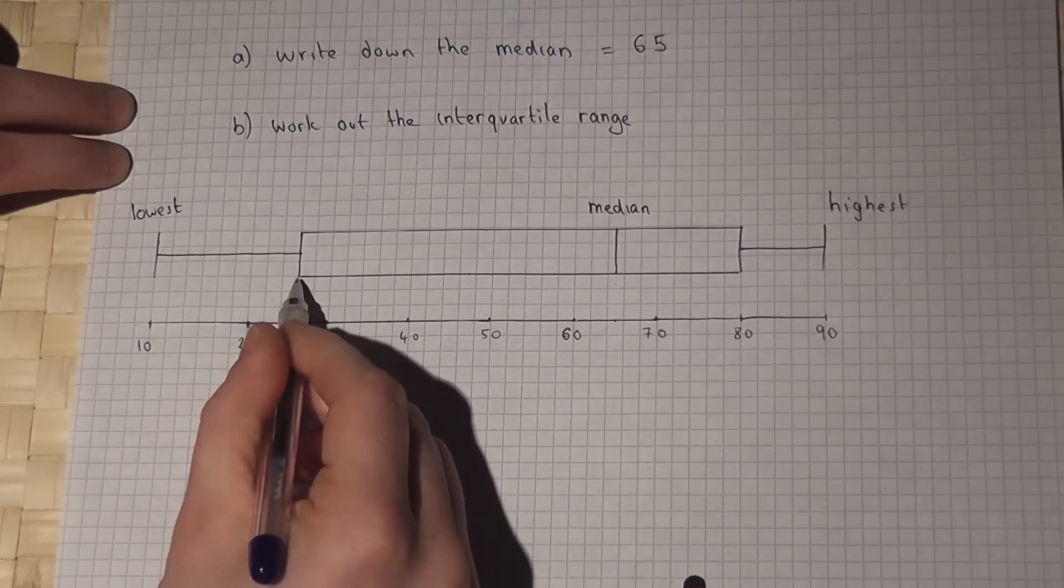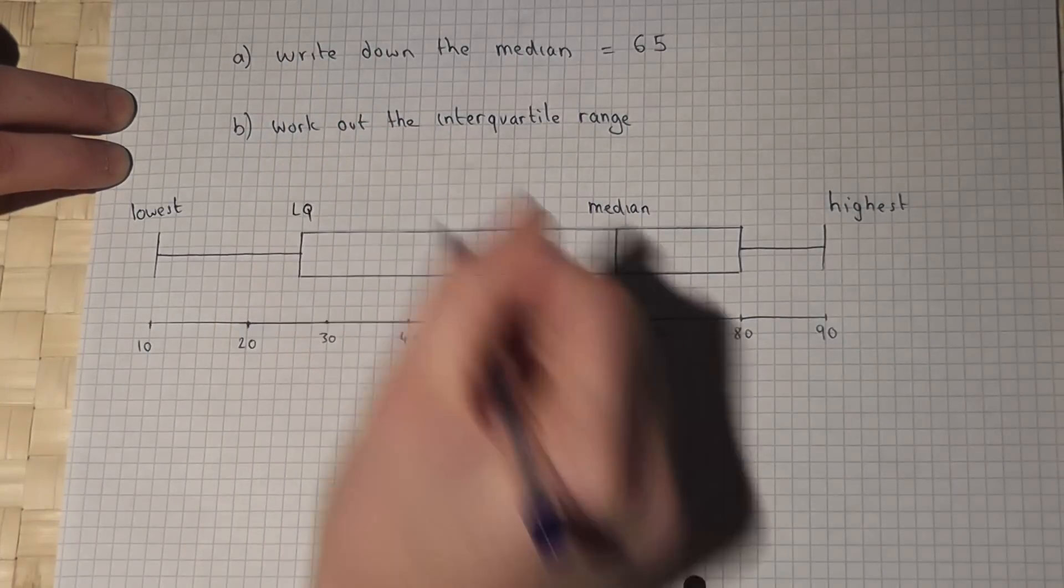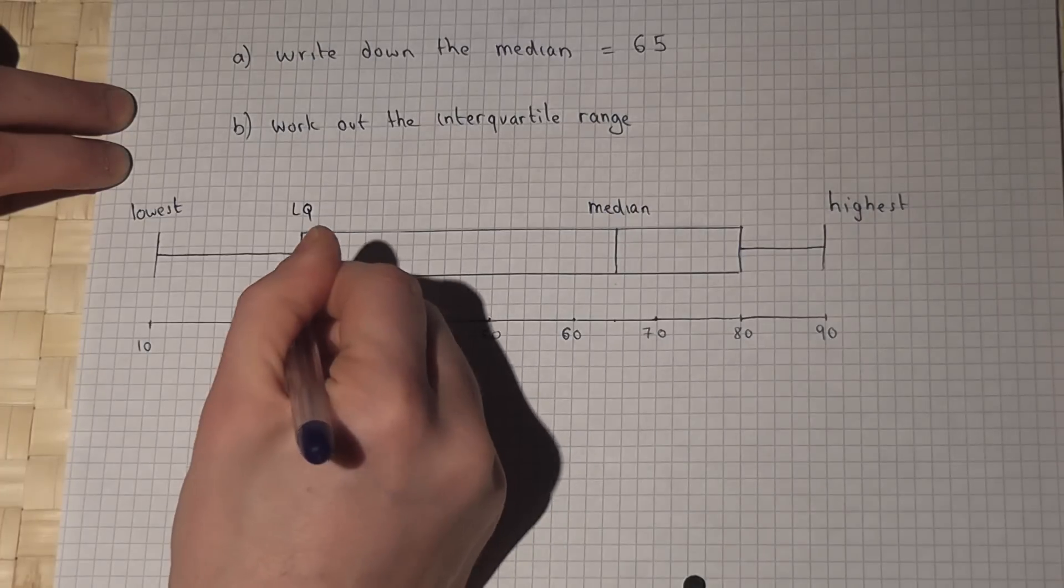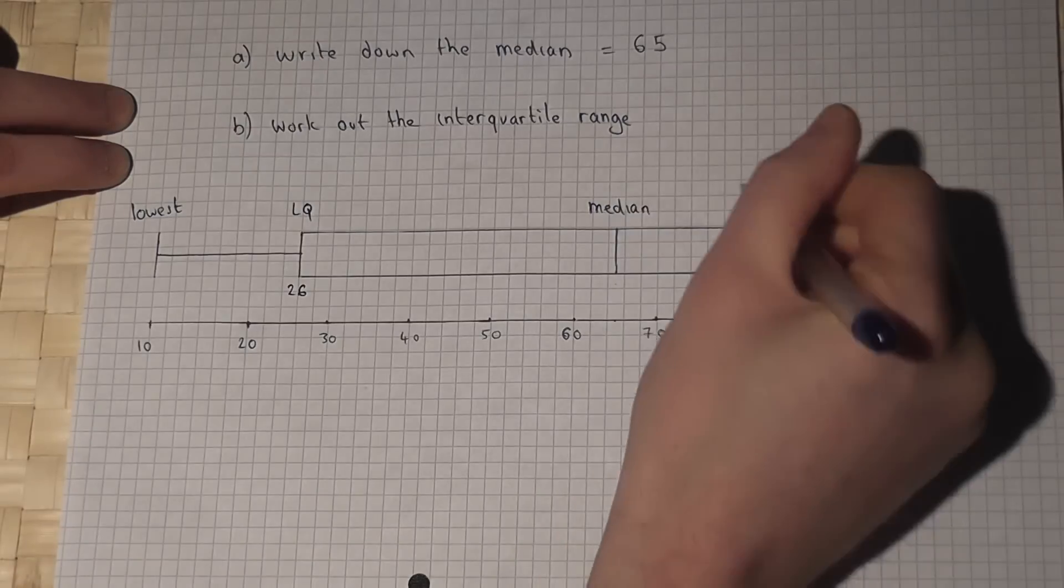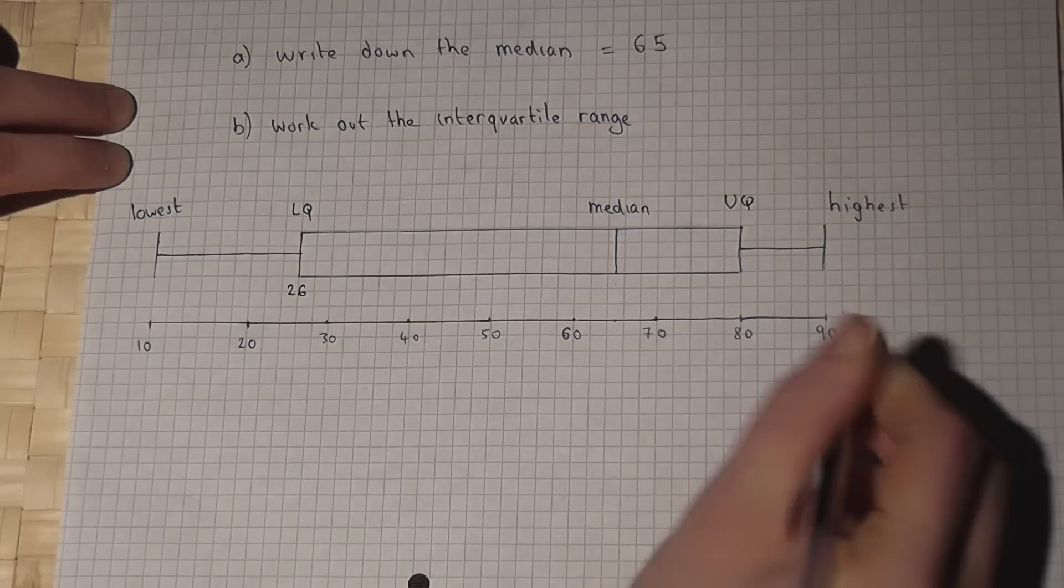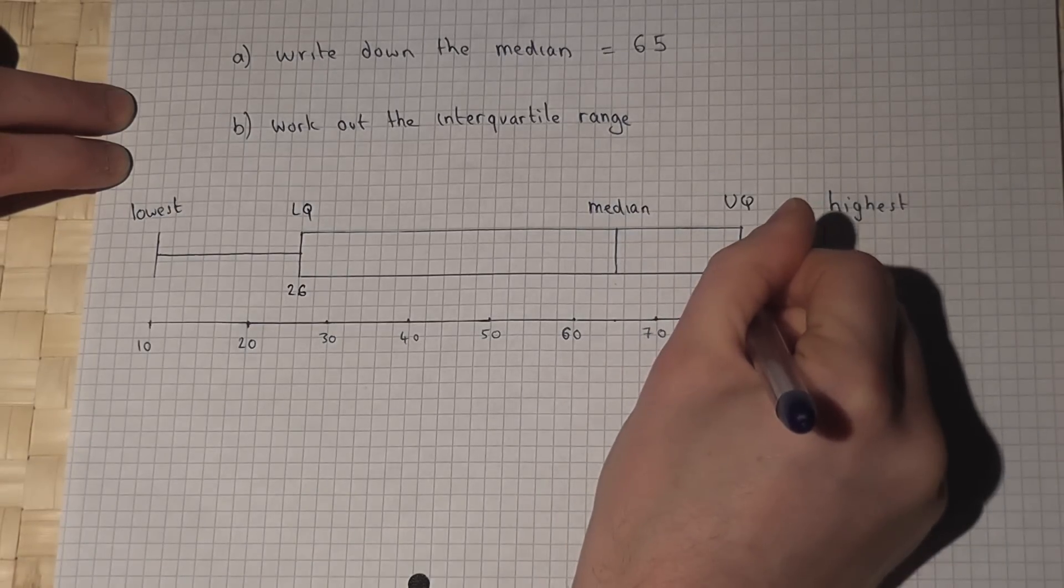Now this line is called the lower quartile. So our lower quartile is at 26. This is the upper quartile, which is at 80.